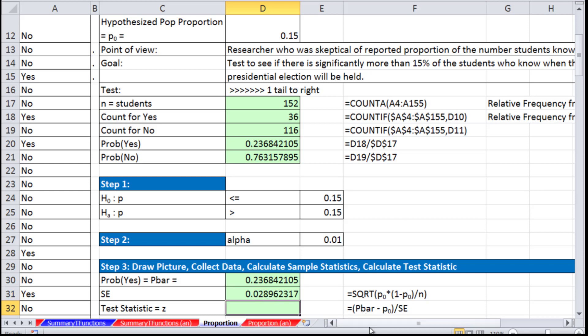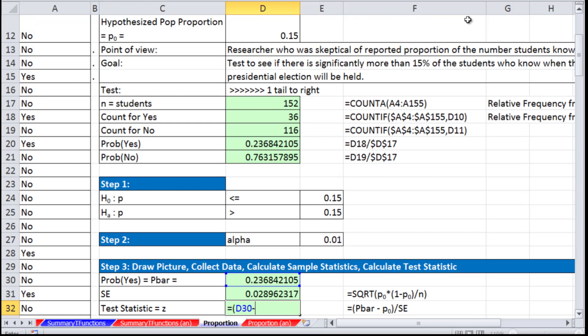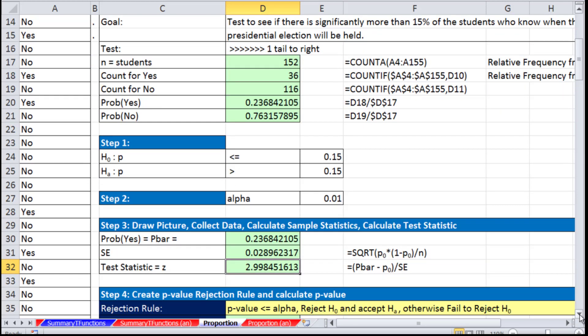Now we can calculate our test statistic. Whatever our statistic is minus the hypothesized parameter divided by the standard error. In parentheses, there's our P-bar minus our hypothesized proportion, close parentheses divided by our standard error. We got 2.99.